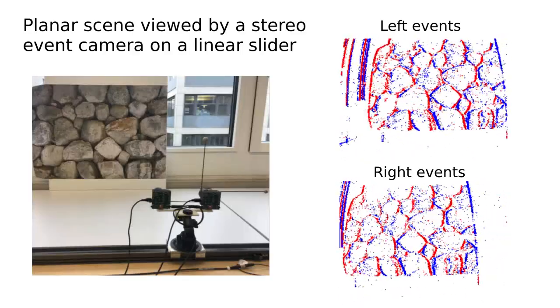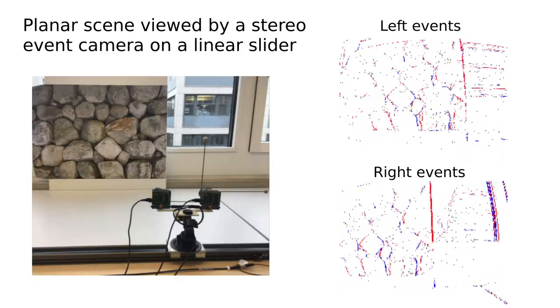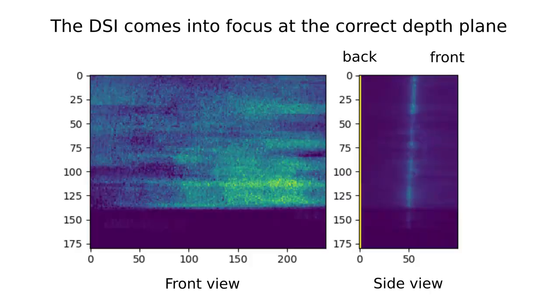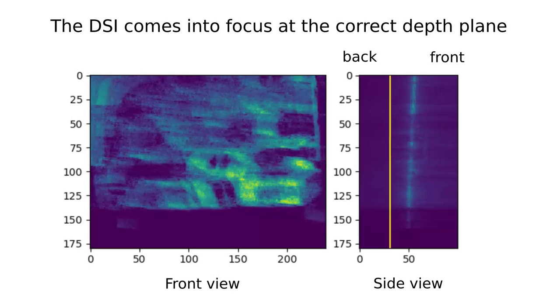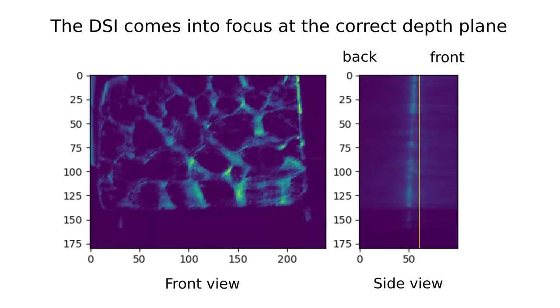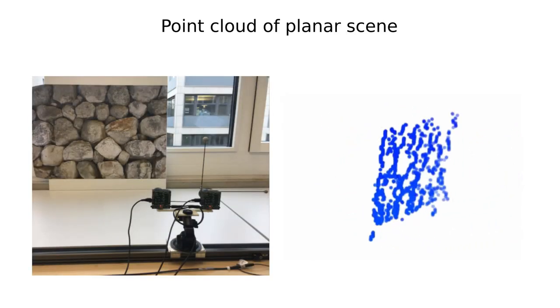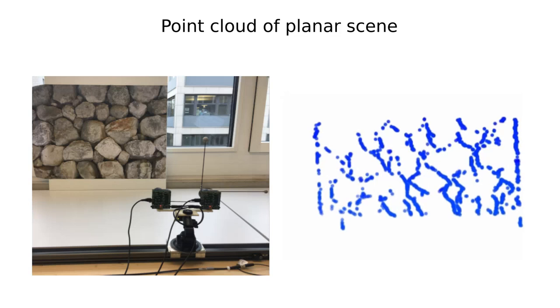Let us show a simple example of a stereo event camera mounted on a horizontally translating slider that observes a frontal parallel scene. While sweeping across the depth planes from back to front, we see that the front view of the DSI becomes sharp only at the correct depth. The resulting point cloud is able to recover the planar scene structure.